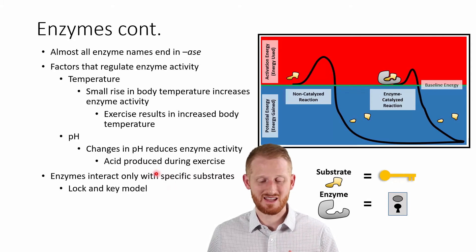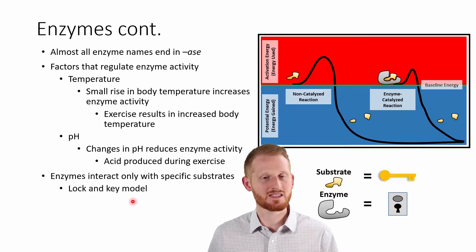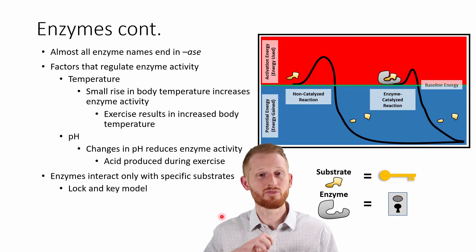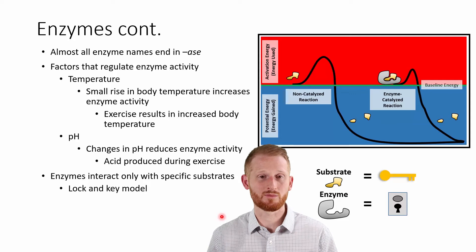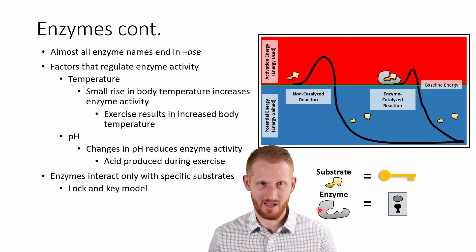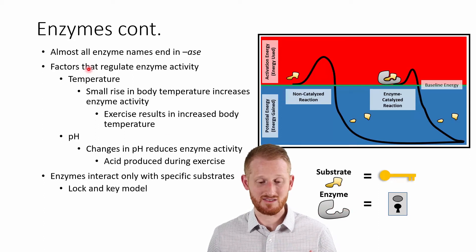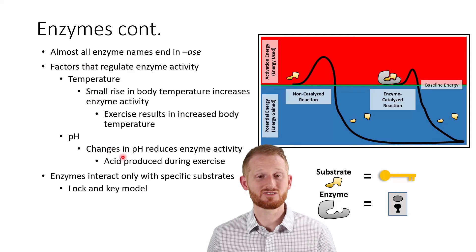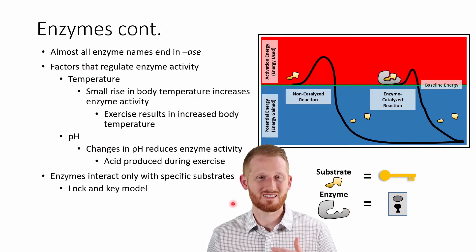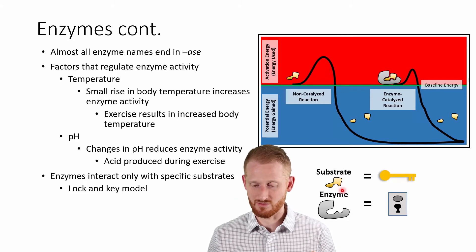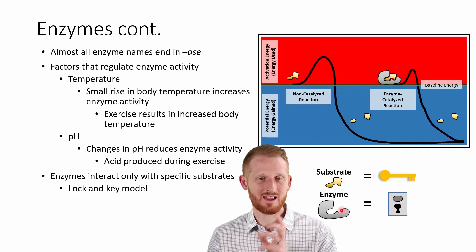The enzyme and substrate need to fit together — it's a lock-and-key style model. If they don't fit together properly, if their physical form is not the proper form to combine together, then it's not going to happen. If anything changes the shape of these enzymes — any of these various modulating factors can possibly change the shape of the enzyme or the substrate — it's going to make it harder for the substrate and enzyme to get together and have their action.